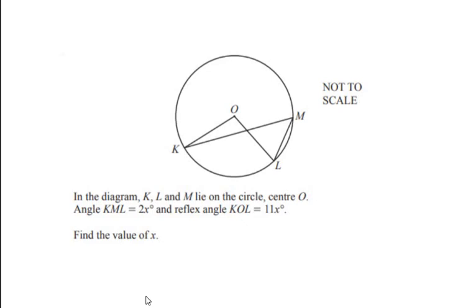Hello and welcome to my channel. In this video we are going to solve an example on circle theorems. In the diagram, K, L and M lie on the circle with center O — so K, L and M are the points which are on the circle. Angle KML is 2x degrees.